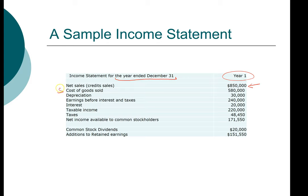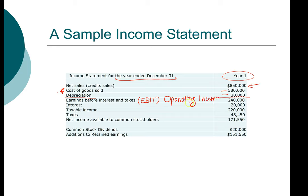Cost of goods sold is a cash expense related to the operation of the firm. Depreciation is a non-cash expense. When we subtract cost of goods sold and depreciation from revenue, we have earnings before interest and tax, abbreviated as EBIT. Another name for EBIT is operating income — in this case $240,000. We subtract interest to get taxable income, and we subtract taxes from taxable income to get net income. If we divide net income by the number of shares outstanding, we have earnings per share.